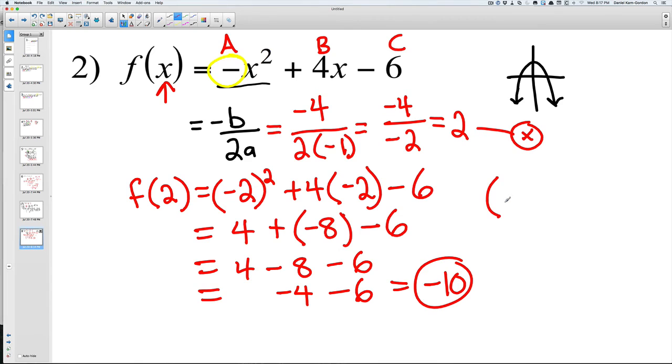And so your final answer is: x is going to be two, y is going to be negative ten. And in this case it's a maximum, so our max is going to be equal to negative ten.